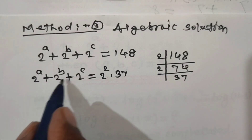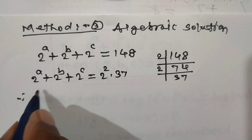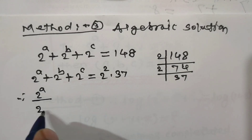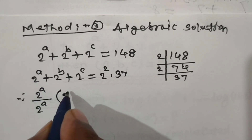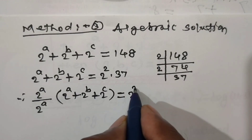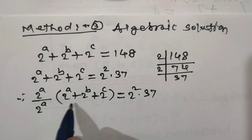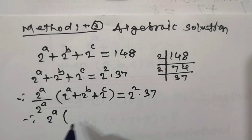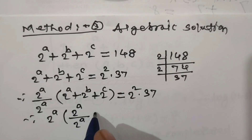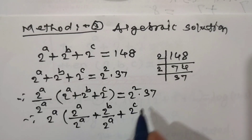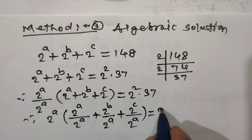On the left hand side, take 2^a common from the three terms — equivalently, divide and multiply the left hand side by 2^a. We get: (2^a / 2^a) × (2^a + 2^b + 2^c) = 2² × 37. Taking 2^a inside the bracket and dividing each term: 2^a × (2^a/2^a + 2^b/2^a + 2^c/2^a) = 2² × 37.